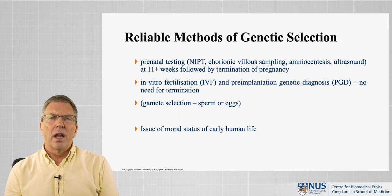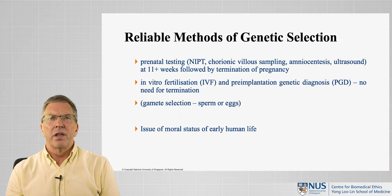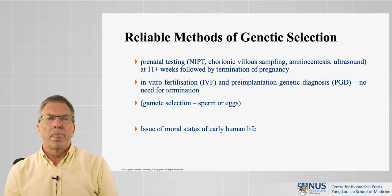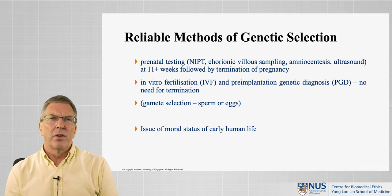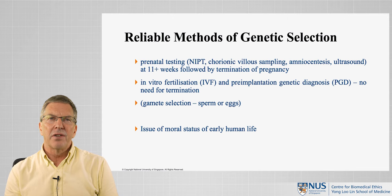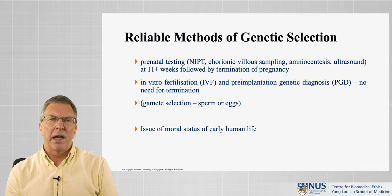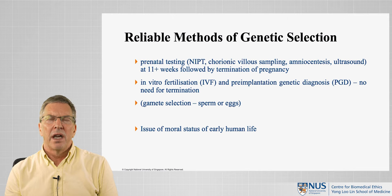There are a number of ways in which the characteristics of our children can be selected. These involve prenatal testing, which is either non-invasive prenatal testing, chorionic villus sampling, amniocentesis, or ultrasound, which can allow selection at about 10 to 11 weeks of gestation, followed by termination of pregnancy.